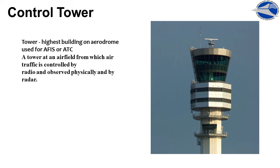The tower is the highest building at an airport, used for ATC. It is a tower at an airfield from which air traffic is controlled by radio and observed physically and by radar. The tower controls the air traffic and monitors the departure and arrival of aircraft. ATC stands for air traffic control — a service provided by ground-based controllers who direct aircraft on the ground and in the air.